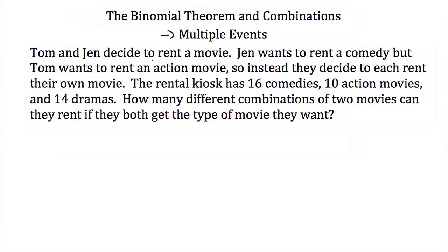Here, Tom and Jen decide to rent a movie. Jen wants to rent a comedy but Tom wants to rent an action movie, so they decide to each rent their own movie. The rental kiosk has 16 comedies, 10 action movies, and 14 dramas. Tom is going to choose one movie out of 10 action movies, so the different combinations for Tom would be 10 choose one.